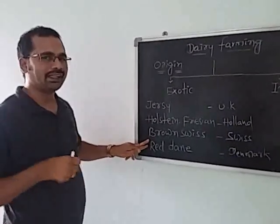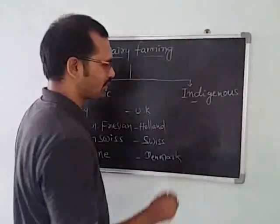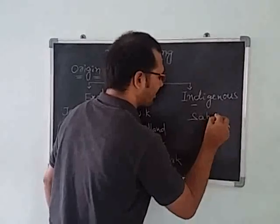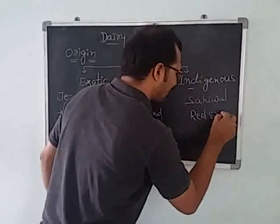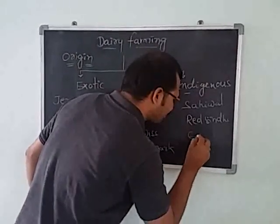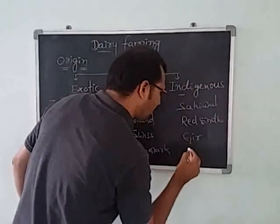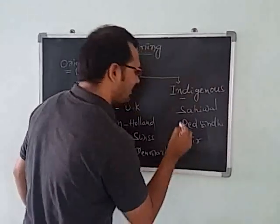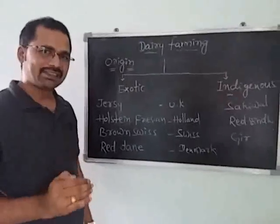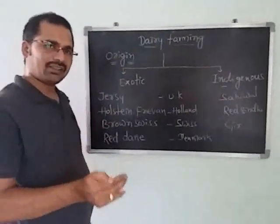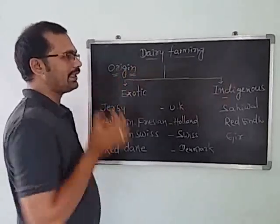Now coming to indigenous breeds — those we already discussed previously. The indigenous breeds include Sahiwal, Red Sindhi, Gir, Ongole, and Haryana. All these breeds we call as indigenous breeds. Based on origin, breeds are classified into two types: exotic breeds and indigenous breeds.